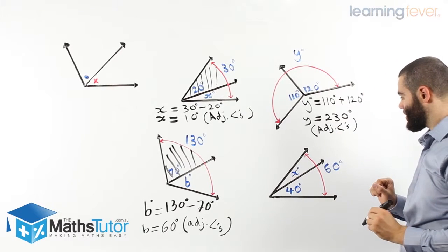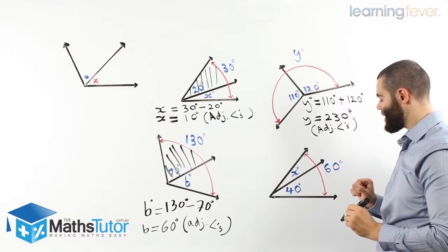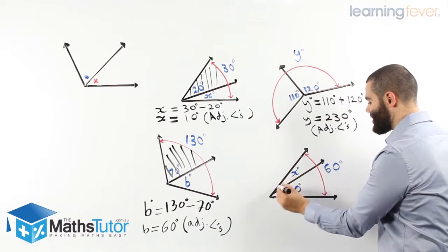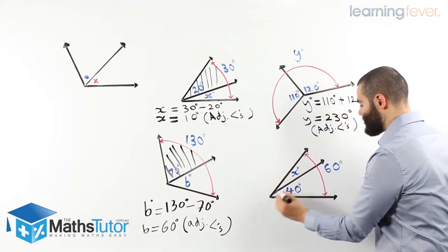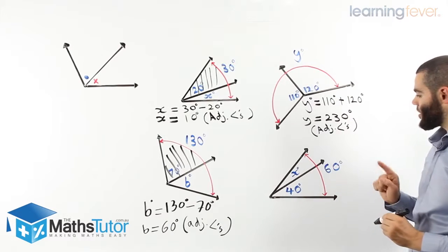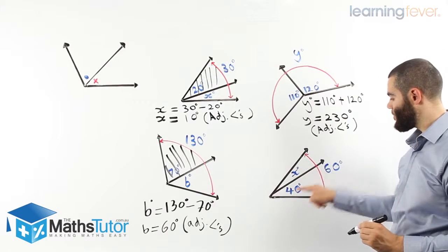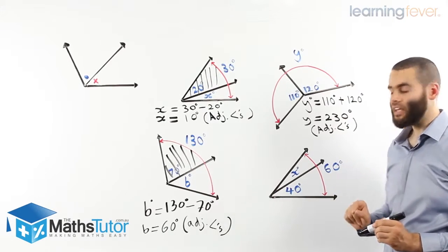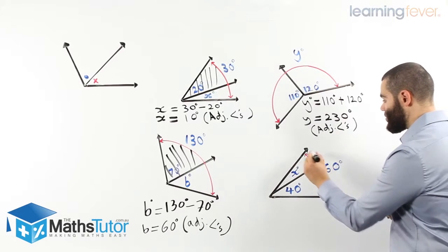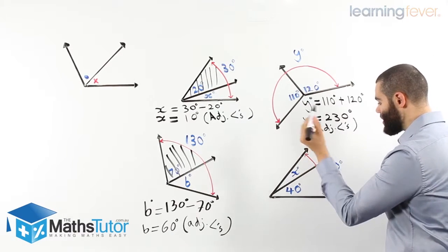Last one. Another adjacent angles that we have, where we know one is missing, marked with an X. The other one is 40. We look at it and we know, okay, straight away, they share a common arm. They share a vertex. These are adjacent angles. The total is 60 degrees. Very easy.